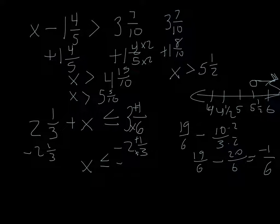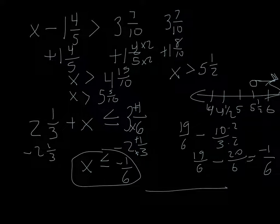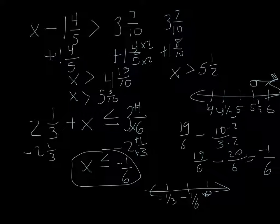So, my x would be less than or equal to negative 1 sixth. This would be the inequality solution to graph it. Negative 1 sixth. Let's make that 0 over here. And negative 1 third, which would be the 2 sixths. I would have a filled in circle with the arrow going in that direction.